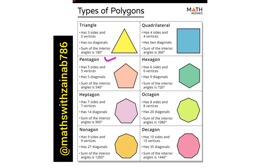The next one is a pentagon, which has five sides and five vertices. These corners are called vertices. It has five diagonals. The sum of the interior angles is 540 degrees.